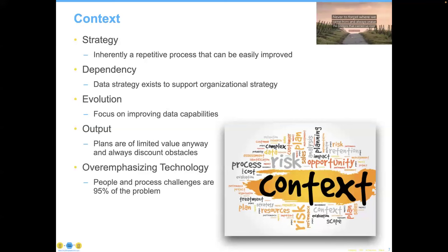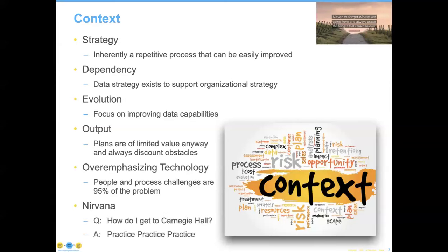The plans are of limited value and always discount obstacles. There's an overemphasis on technology. Year after year, our surveys show the same results — the people and process challenges are the large parts of the problem. So how does one get to Carnegie Hall? One asks if one is a musician. The answer is practice, practice, practice.